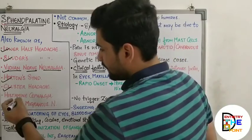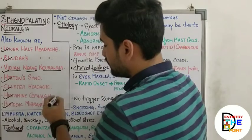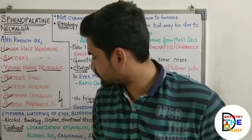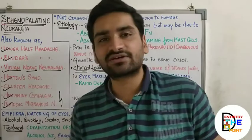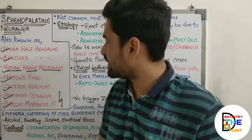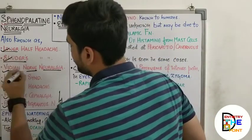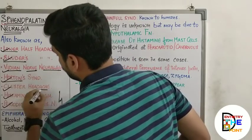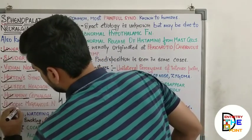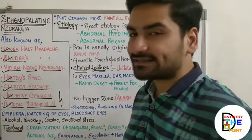Additional names include cluster headache, histamine cephalgia, and periodic migraineous neuralgia. To summarize all the names: lower half headache, Sluder's headache, vidian neuralgia, Horton syndrome, cluster headache, histamine cephalgia, and periodic migraineous neuralgia. Any of these names can be asked in examination questions.